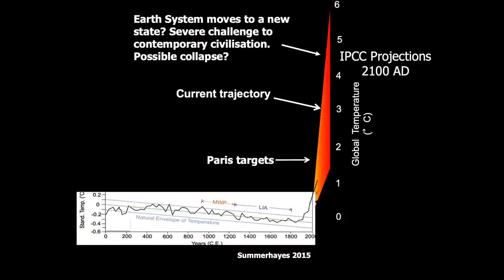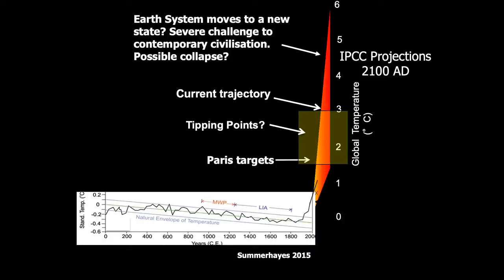I want to talk about the concept of tipping points. Many of these tipping points are vulnerable to temperature rises in the span of 1.5 to 3 degrees, and we're approaching 1.5 — we'll probably pass 1.5 in a bit over a decade. Once we start tipping them, they will push the Earth's system on their own up to the higher temperatures and we won't be able to stop it. So there is a point of no return in this trajectory that you really don't want to push the Earth's system past, or we'll be in real trouble.